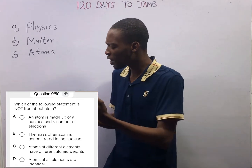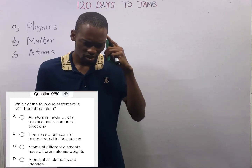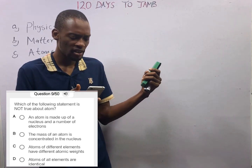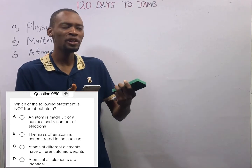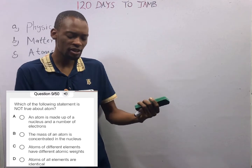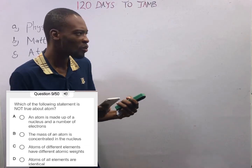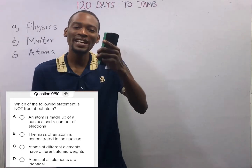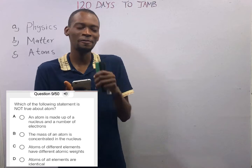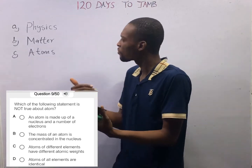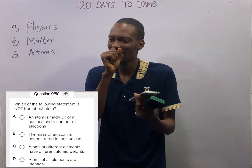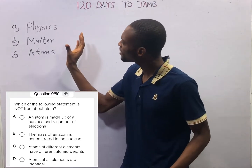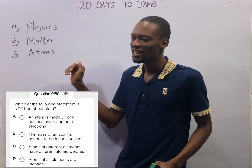When you see questions like this, you reason: what is an atom? Is an atom made up of a nucleus and a number of electrons? Where is the mass of the atom concentrated? To make sure you understand this question and can solve 101 other similar questions on atoms, we shall be taking a look at physics, matter, and atoms.